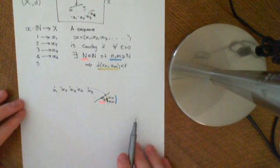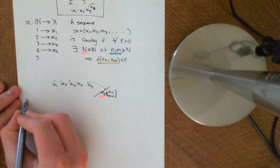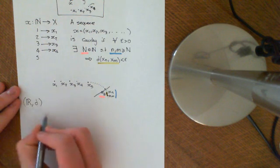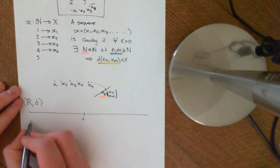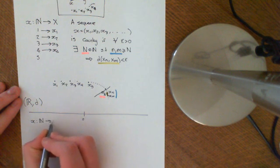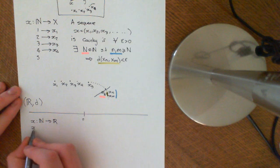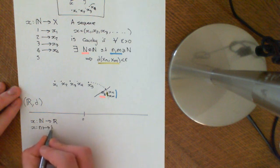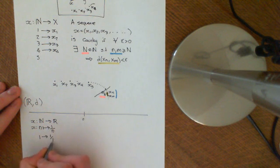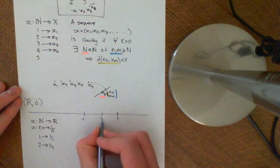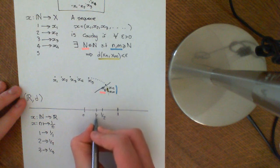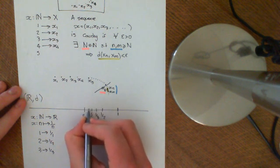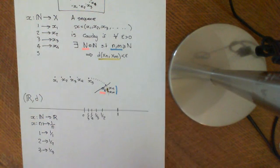Let's do a very basic example. We'll go into the most intuitive metric space of them all, which is the real numbers with the Euclidean metric. We're going to take our sequence X mapping the natural numbers onto the real line, and specifically X is going to take a natural number n onto 1 divided by n. So it takes 1 to 1, 2 to 1/2, 3 to 1/3, and so on — a third, a quarter, a fifth, etc. It obviously converges on 0 in this metric space.